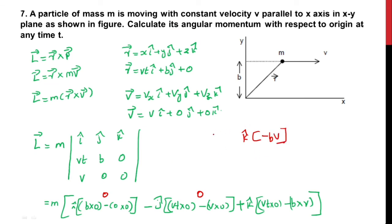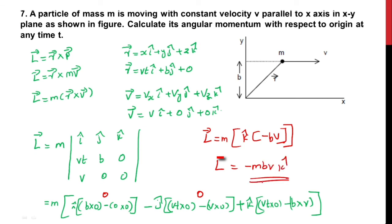The final answer is L vector equals m times k̂ times (minus bv), so L = minus mbv·k̂. This is the final answer.